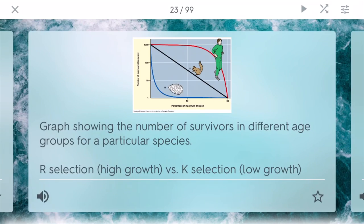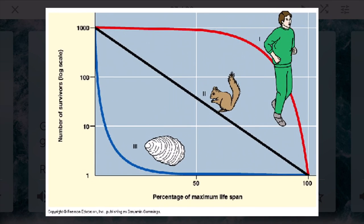A survivorship curve is a graph showing the number of survivors in different age groups for a particular species. R-selected species have high initial growth, while K-selected species like humans have lower growth and tend to survive into later years. Species like squirrels survive in middle age groups, so their chance of living long is about the same as living short.